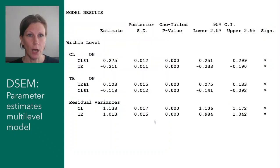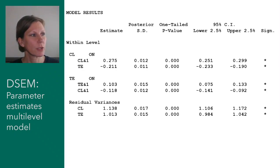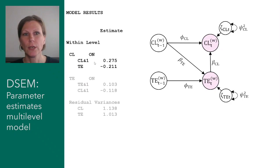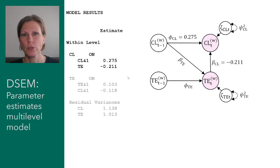When we look at the output and parameter estimates, we first see a part referring to the within-person level. First we have closeness regressed on closeness at the preceding occasion — the auto-regressive relationship referring to this arrow — and tension at the same occasion, referring to this arrow. We can fill in these numbers for those arrows in our path diagram.